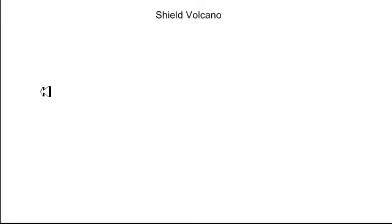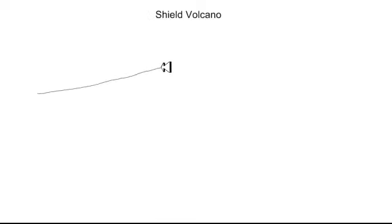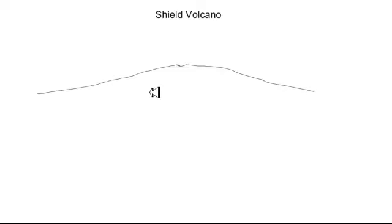Shield volcanoes are very large in terms of their aerial extent — the area of land that the volcanic cone covers — but they have very gently sloping sides. Looking at a side-view profile, the sides slope very gently up to the top of the volcanic cone and then gently down the other side. This very broad, gently sloping shape reminded somebody of an overturned warrior shield lying on the ground, which is how they came up with the name shield volcano.